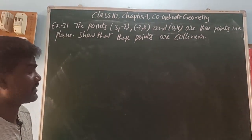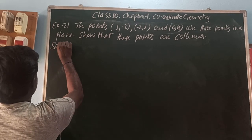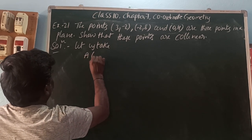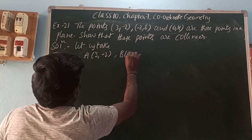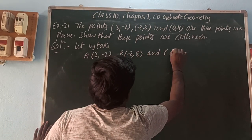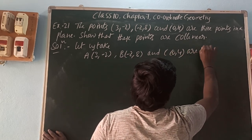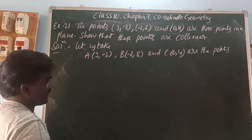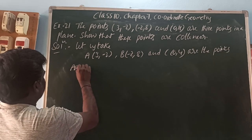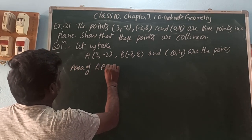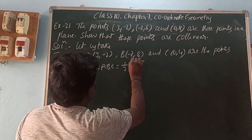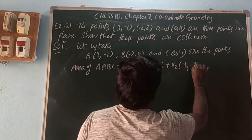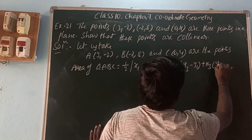We use the area of triangle method. Let A(3, -2), B(-2, 8), C(0, 4). Area of triangle ABC = (1/2)|x1(y2 − y3) + x2(y3 − y1) + x3(y1 − y2)|. Here x1 = 3, y1 = -2, x2 = -2, y2 = 8, x3 = 0, y3 = 4.